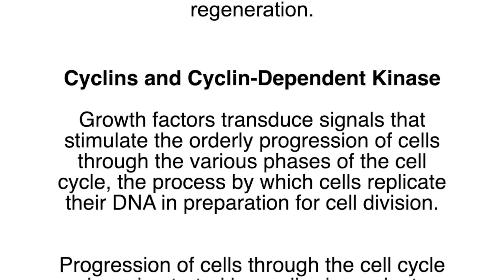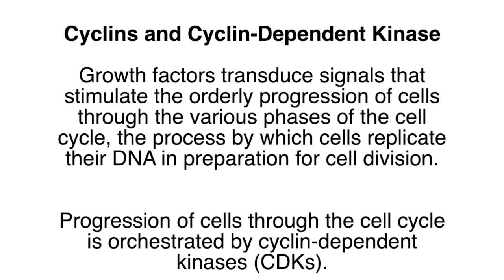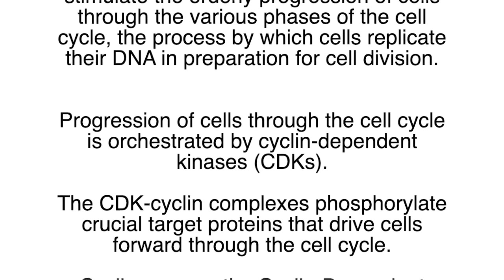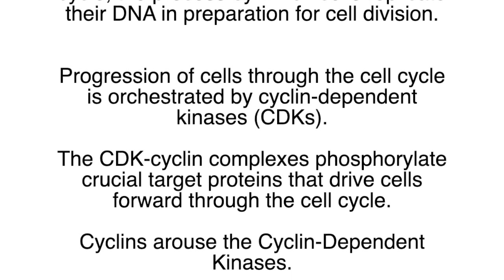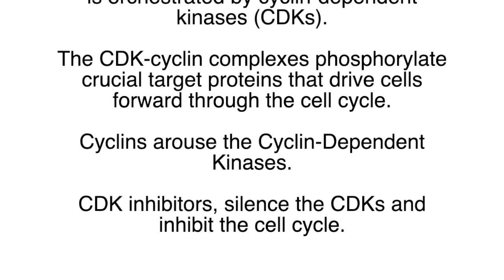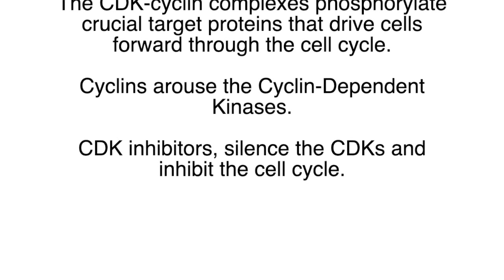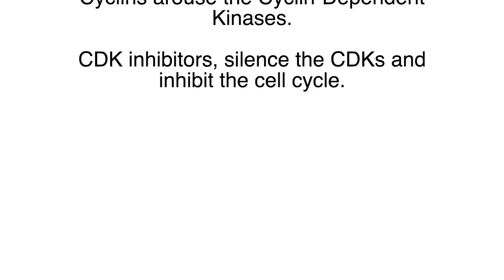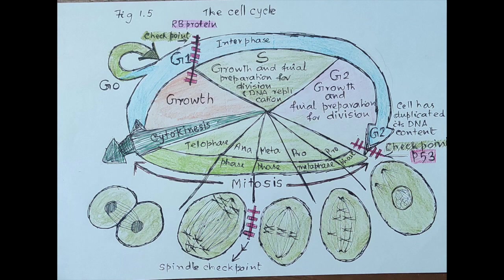Cyclins and cyclin-dependent kinases: Growth factors transduce signals that stimulate the orderly progression of cells through the various phases of the cell cycle — the process by which cells replicate their DNA in preparation for cell division. Progression through the cell cycle is orchestrated by cyclin-dependent kinases (CDKs). The CDK-cyclin complexes phosphorylate crucial target proteins that drive cells forward through the cell cycle. Cyclins arouse the CDKs; CDK inhibitors silence the CDKs and inhibit the cell cycle. A normal cell is mostly concerned with day-to-day activities during the quiescent interphase.